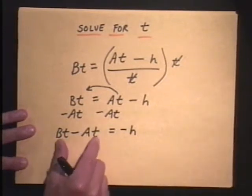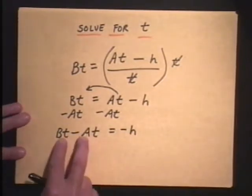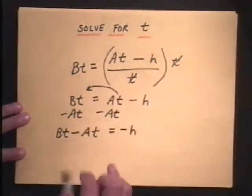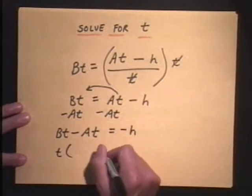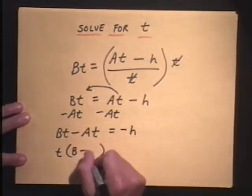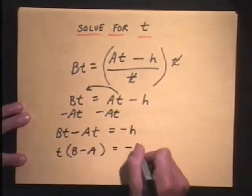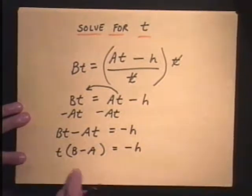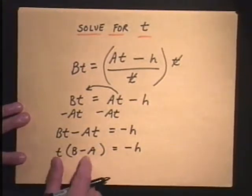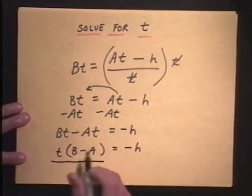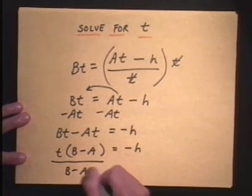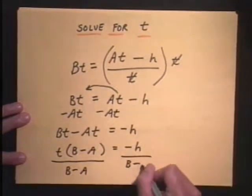Now, these aren't like terms, Young. I can't put them together, but I can factor out. Since I see t's in common here, I'm after t. Take out that common t, and that will leave us with B minus A equals the minus H. So to get t by itself, to take out multiplication, attack with division. So you can divide both sides by the B minus A.